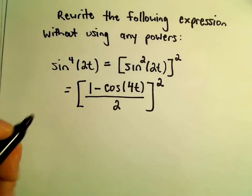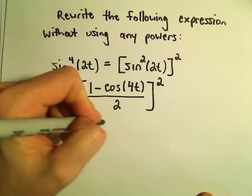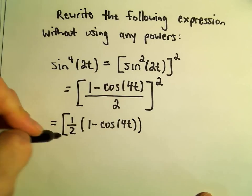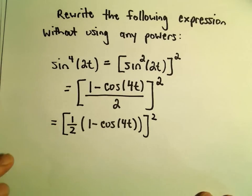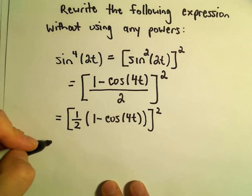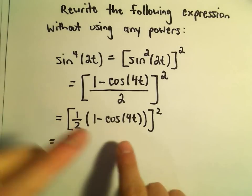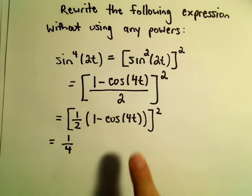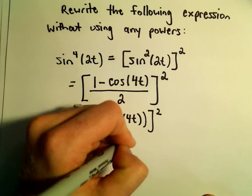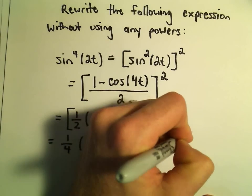You could think about this as being the same thing as 1 half times 1 minus cosine of 4t, all of that squared. So we have to square everything. Well, 1 half squared is simply going to give us 1 fourth. But then we also have to square the 1 minus cosine of 4t, so we'll write that out as 1 minus cosine of 4t times 1 minus cosine of 4t.